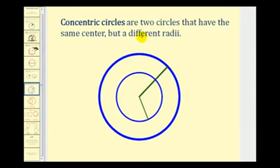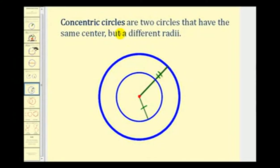Concentric circles are two circles that have the same center. Notice how they share this point here as a center but have different radii — radii being the plural form of radius. The length of the inner radius would not be the same as the length of the radius of the larger circle, so concentric circles may remind you of a bull's eye.